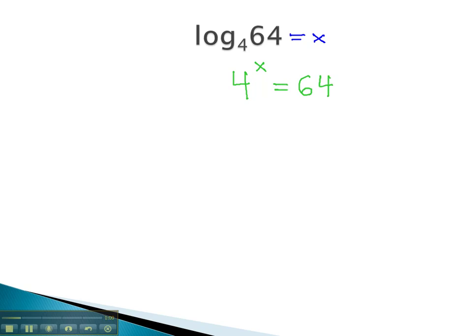We have solved problems like this before by getting the same base on both sides. We could do this either by writing both sides as a base of 2, or both sides as a base of 4. Let's go with a base of 2 on this problem. 4 is 2 squared with an exponent of x on it. 64 is 2 to the 6th power. To combine those exponents, we simply multiply to get 2 to the 2x equals 2 to the 6th.